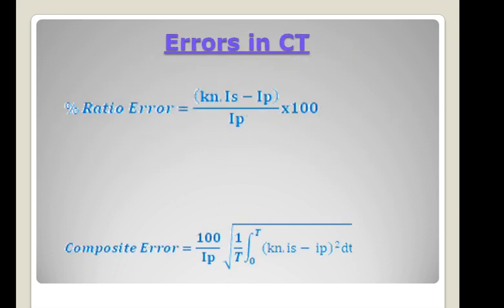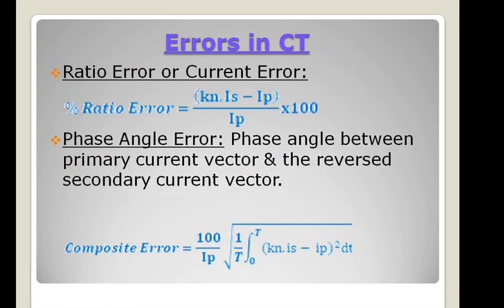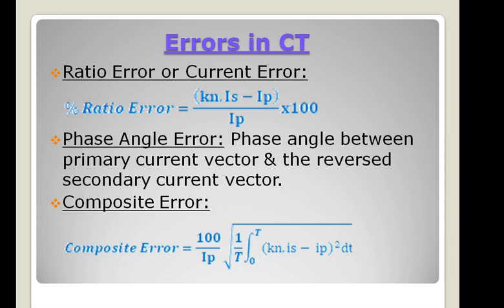Now coming to the errors in current transformers. Keeping in mind CT magnetization and CT saturation, we may face different types of errors in protection and measuring current transformers. There are three types of CT errors. Number one is ratio error, or current error. Ratio error is defined as the percentage error in the magnitude of the CT secondary current. It can be expressed as: percentage error = (KN × IS − IP) / IP × 100%, where KN is the rated transformation ratio, IS is the actual secondary current, and IP is the actual primary current.